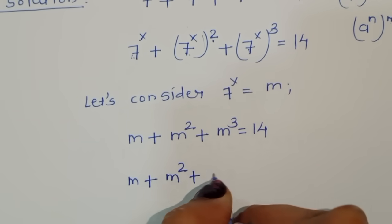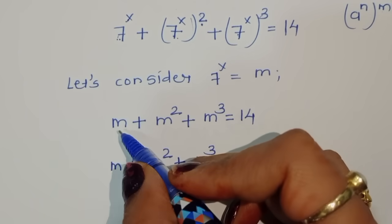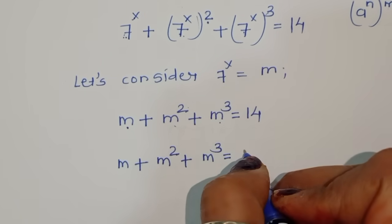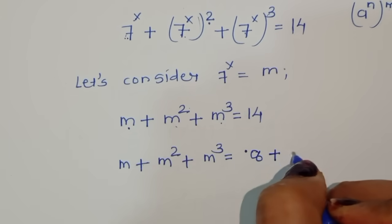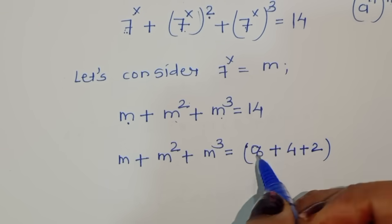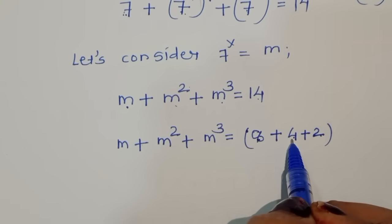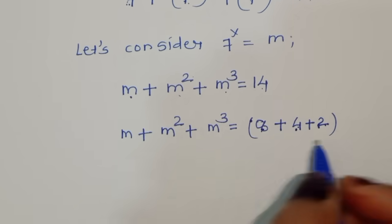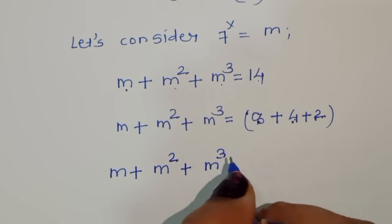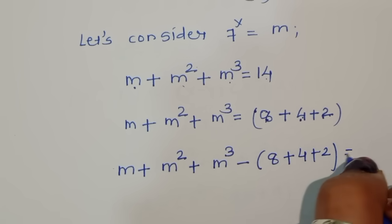Now we need to break 14 into a number, its square, and its cube form using the same number. We can write 14 = 8 + 4 + 2, where 8 is the cube form (2³), 4 is the square form (2²), and 2 is the real number. So m + m² + m³ − (8 + 4 + 2) = 0.